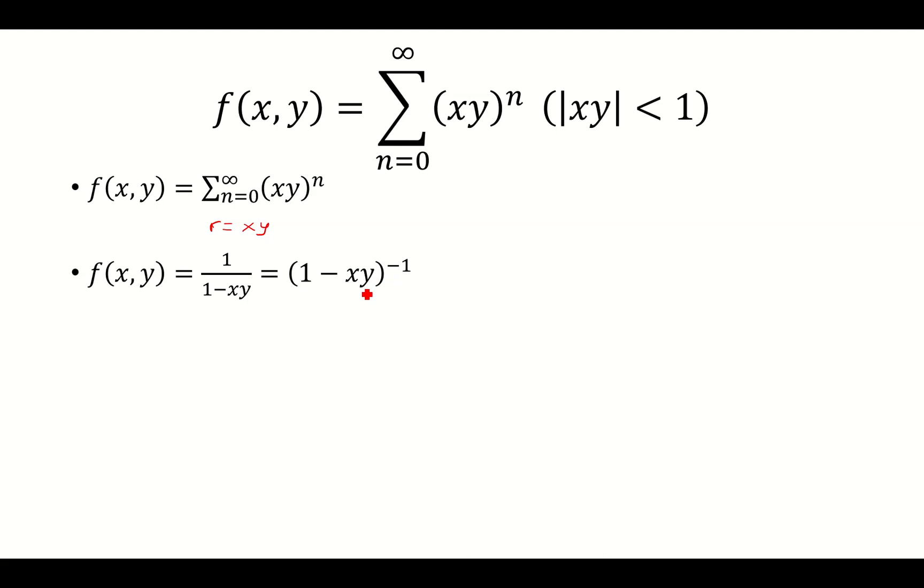Now I can take the derivative with respect to x. I'm going to use the chain rule. I'm bringing down the exponent, leaving the inside the same, subtracting 1 from the exponent, so that would be the negative second power. Then I take the derivative of the inside with respect to x.